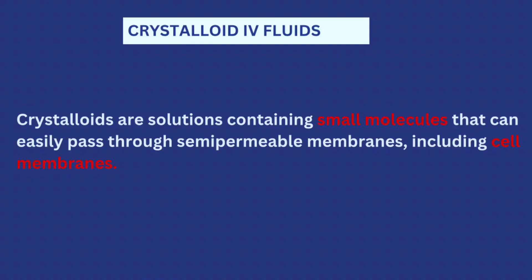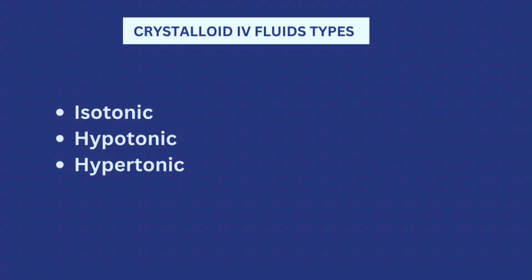Crystalloids are IV fluids that have very small molecules and they can pass through the cell membrane. There are three major types of crystalloid IV fluids, and they are classified based on their osmolarity when compared to the osmolarity of the blood plasma. You have the isotonic, the hypotonic, and the hypertonic fluids.